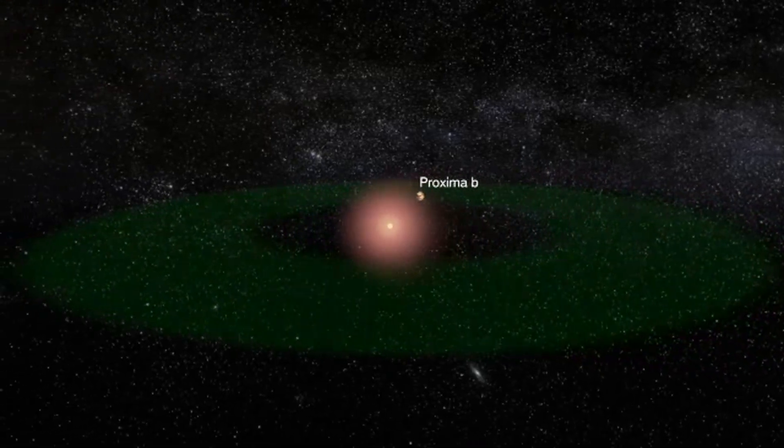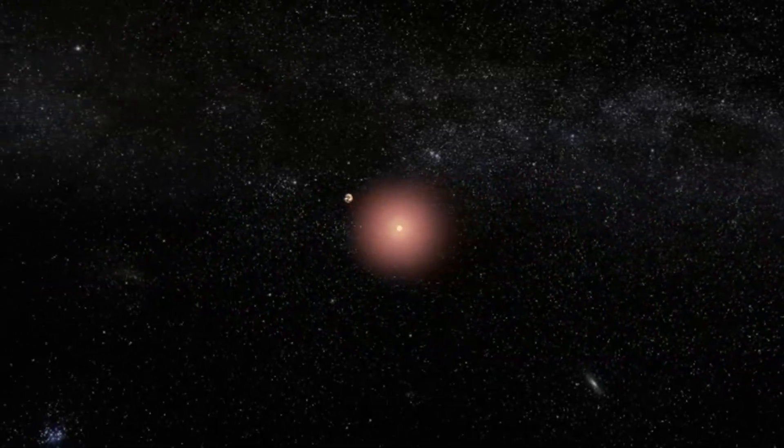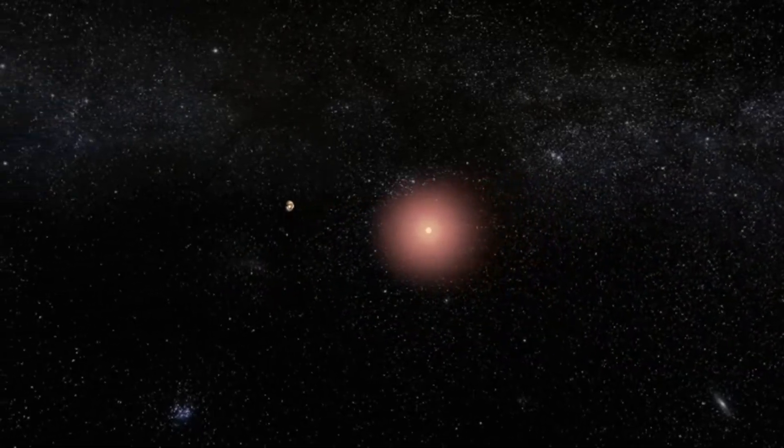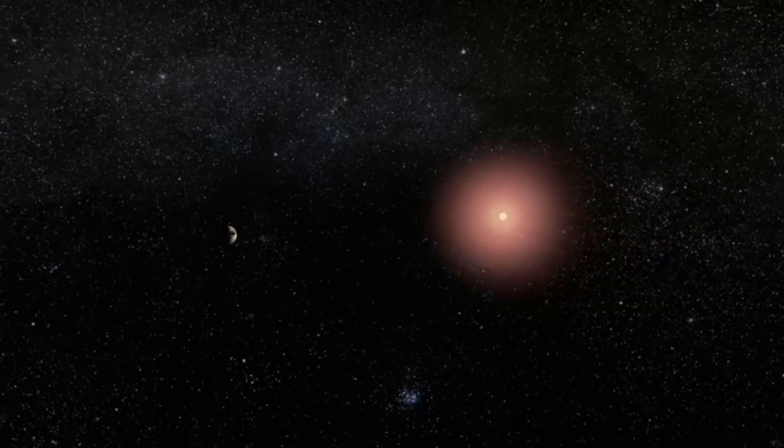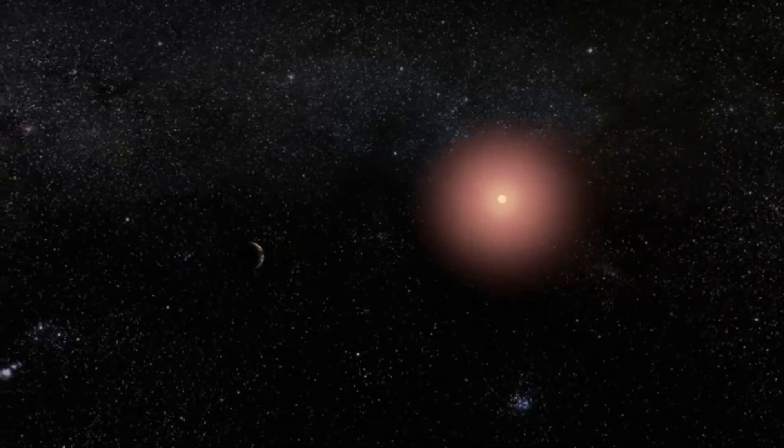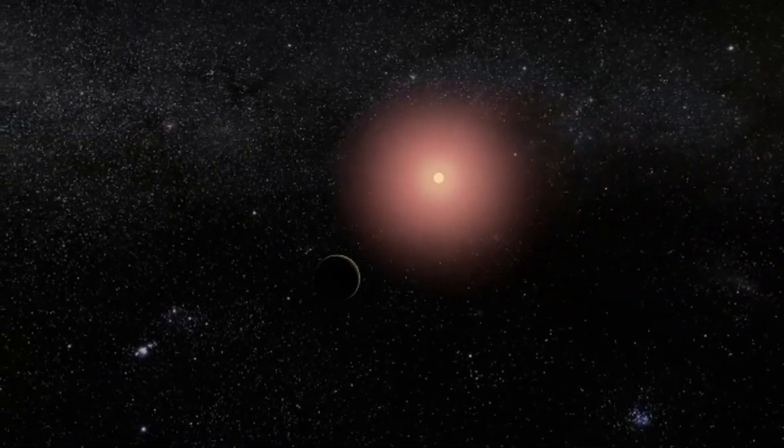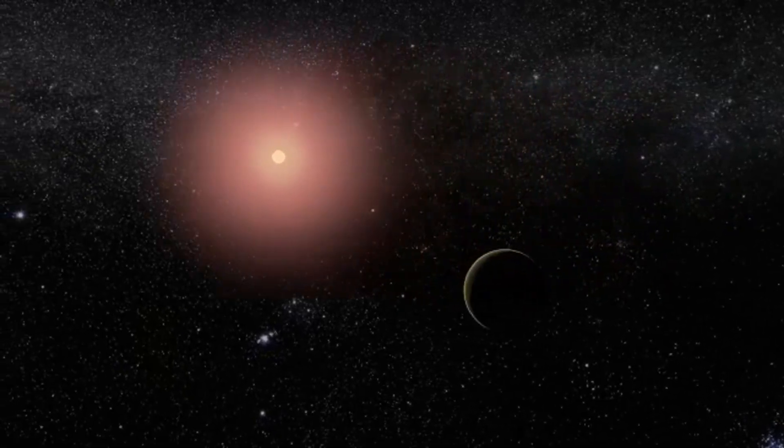This vast ocean, at least in theory, could harbor the potential ingredients for basic microbial life. These dense atmospheres would trap heat from the star, allowing liquid water to exist over a much wider range of distances from the star compared to rocky planets like Earth.